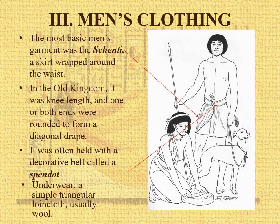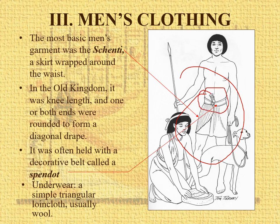Let's talk a little bit about men's clothing. The shinti is the most basic men's garment — you can see it's just a skirt wrapped around the waist, that's it. You might have a belt. They did have underwear: a triangular loincloth, kind of like a big diaper, usually made of wool — particularly for lower classes — but everybody could wear a simple triangular loincloth.